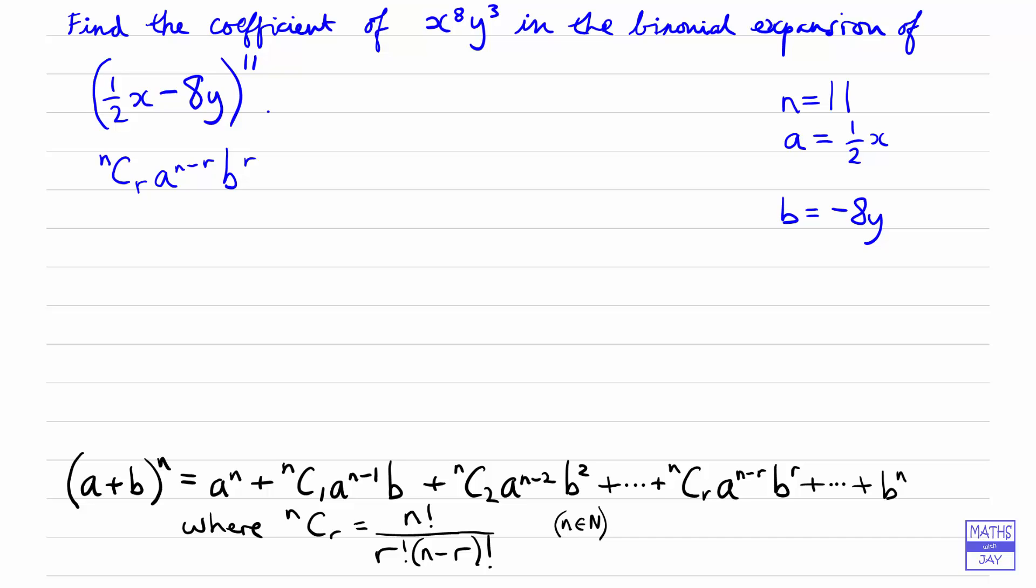Important to put the negative in there as well. Now it's easier to see what r is. r is going to be the power that we're raising the y to, so that's going to be 3. We can check that this also gives us the right power for x. x is being raised to the power of 8, and that's 11 minus 3, and that's fine.